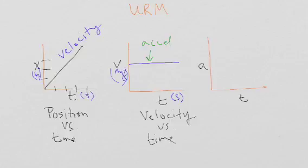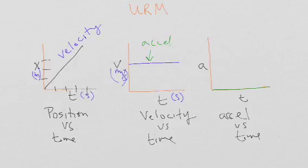Do I have an acceleration? No. Why not? Because if you look at the velocity-time graph, there is no slope. So in the acceleration as a function of time graph, the acceleration is zero — it's down at the x-axis. As a unit check: meters per second on the y-axis times one over second gives meters per second squared, which is the unit for acceleration.